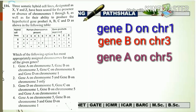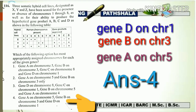If we match our conclusion with the given options, we can see that our conclusion matches option 4. So the correct answer is option 4: gene A is present on chromosome number 5, gene B on chromosome number 3, and gene D on chromosome number 1.